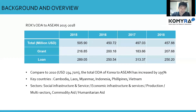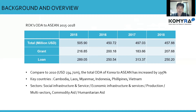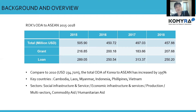ASEAN is one of the vital partners to Korea in terms of ODA. Almost 24% of total ODA is allocated to ASEAN countries. As we saw in the previous slide, following the trend of the total budget, ODA to ASEAN has nearly doubled compared to 2010. Among the countries, ODA mainly focuses on six countries: Cambodia, Laos, Myanmar, Indonesia, Philippines, and Vietnam. ODA also supports various sectors for the development of these key countries, including social infrastructure and services, economic infrastructure and services, production, multi-sector, commodity aid, and humanitarian aid.